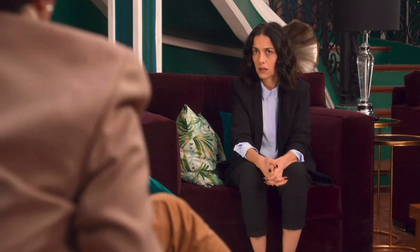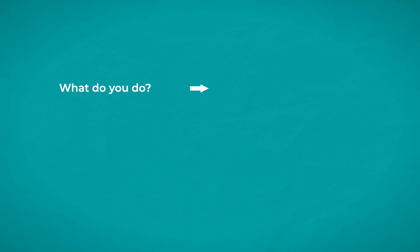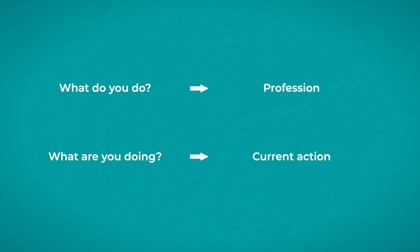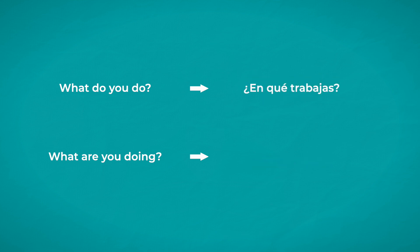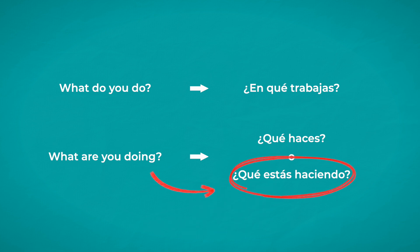¿Qué dices? ¿Qué estás diciendo, Paulina? Now, if English is your first language, one of the most important things I can teach you about this topic is how your English brain will influence your decision-making when you want to speak Spanish. In English, 'what do you do' and 'what are you doing' are very different questions. 'What do you do' is really asking about profession and 'what are you doing' is asking about the thing you are doing right now. Now these translated into Spanish are ¿en qué trabajas? and ¿qué estás haciendo? And as an English native, you'll be tempted to go for this one because it looks like this, and you'll want to avoid this one because it looks like this.